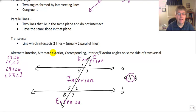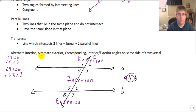The alternate exterior angles — same situation — are on opposite sides of the transversal and in the exterior region. And if we have parallel lines, those two angles will also be congruent. They're not always congruent, only when the lines are parallel. So angle 1 is congruent to angle 7, and angle 8 is congruent to angle 2, and that's because lines A and B are parallel.